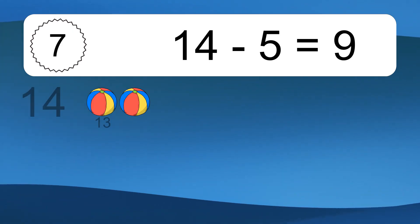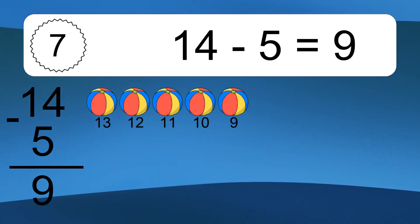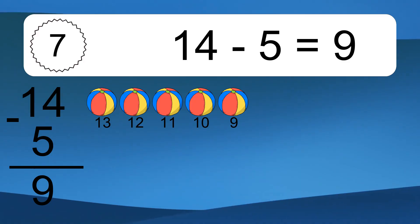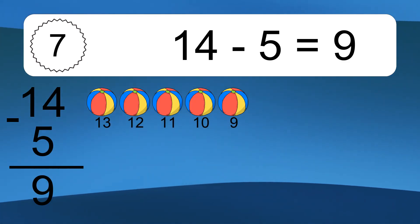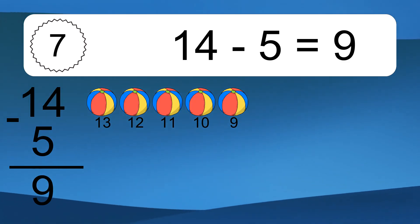14 minus 5 equals what? 14 minus 5 equals 9. Let's count it: 13, 12, 11, 10, 9.